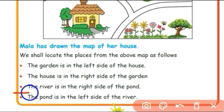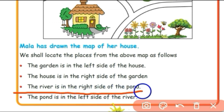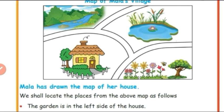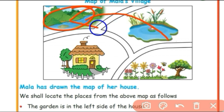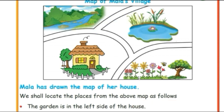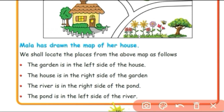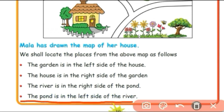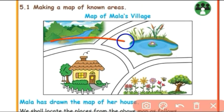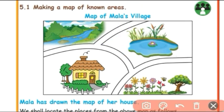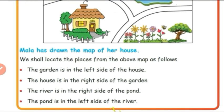Next, the river is on the right side of the pond. The pond is on the left side of the river. This is the map of Mala's village.